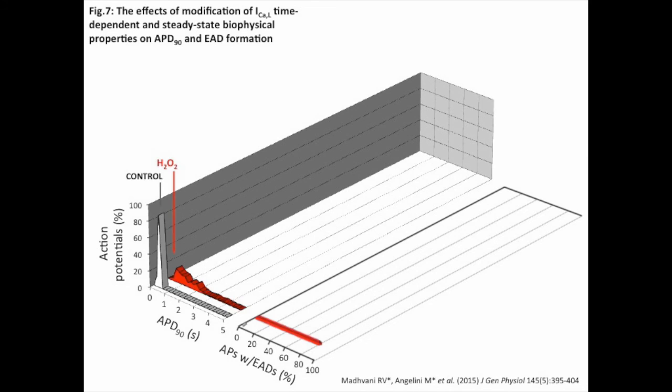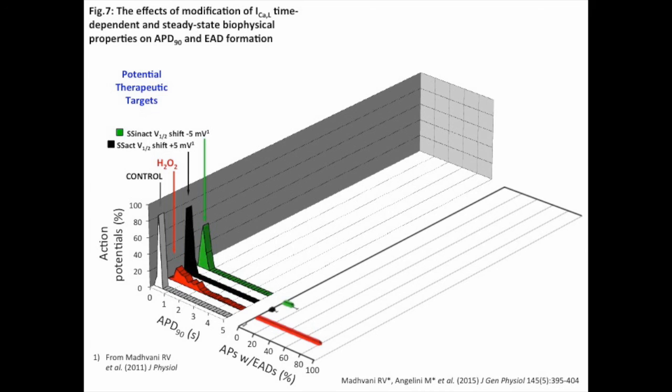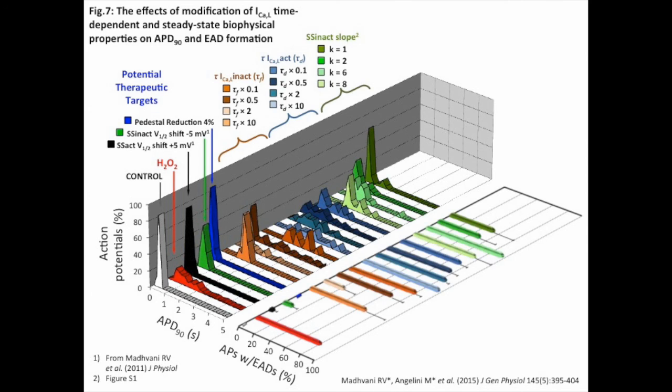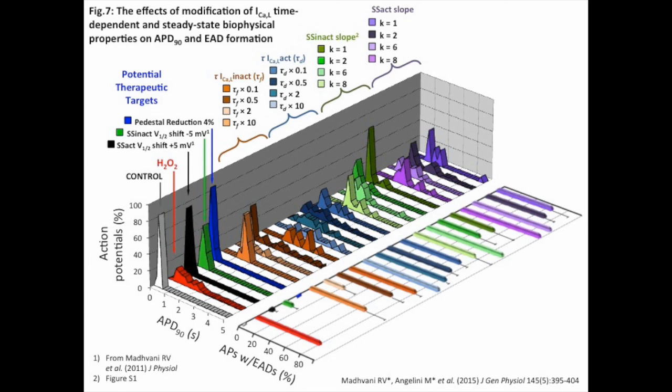Figure 7 summarizes the effects of the various parameter changes on the APD and EAD occurrence, illustrating that three parameter modifications both effectively suppress EADs and restore APD toward a normal value from this and our previous work: a depolarizing shift of the half-activation potential, a hyperpolarizing shift of the half-inactivation potential, and the reduction of the pedestal current. Other modifications of the L-type calcium current voltage and time-dependent properties, such as the time constant of inactivation or activation, or the steepness of the voltage dependence of inactivation or activation, were not effective at preventing EADs or restoring the action potential duration.